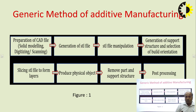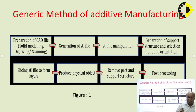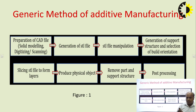Once the support structure is created and build orientation is finalized, we must slice the STL file — this is a very important parameter. Slicing divides the model into different layers, since additive manufacturing creates parts layer by layer. Layer thickness depends on the machine or printer being used — it may be 0.1 mm, 0.2 mm, or 0.3 mm. We slice the part into a number of layers based on the chosen layer thickness.